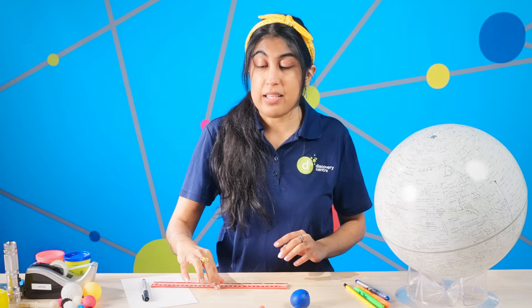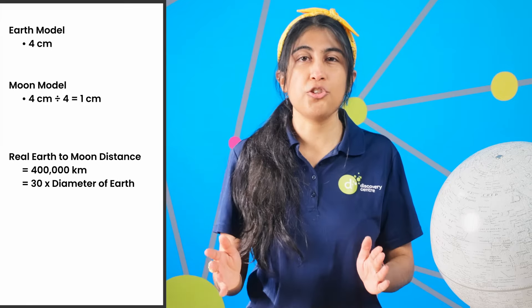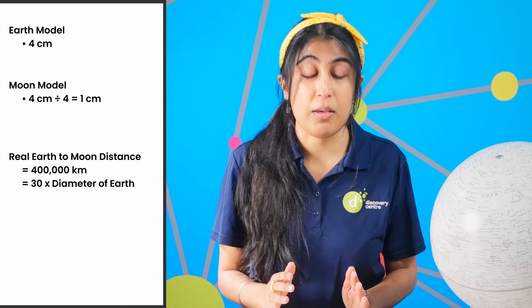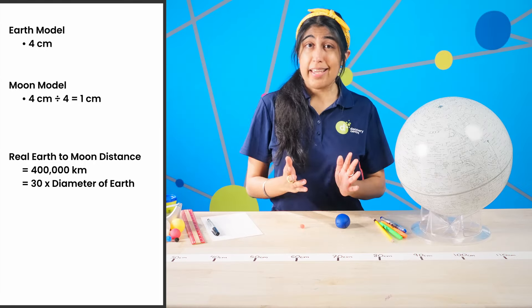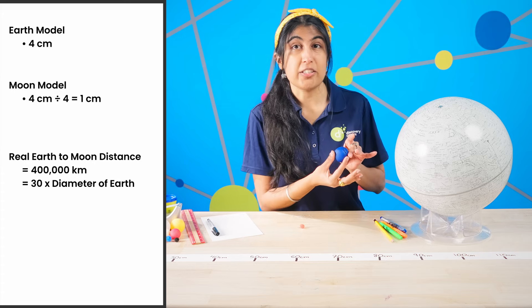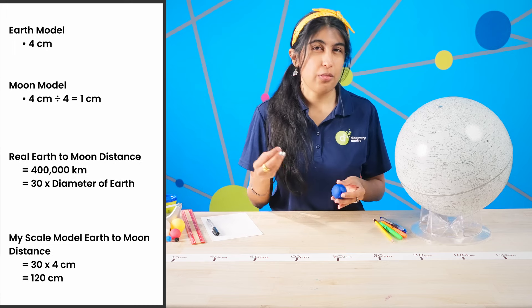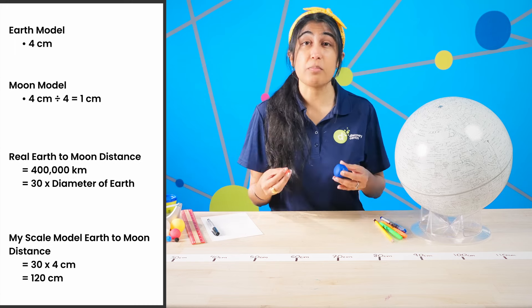Now I must calculate how far away they must be to be to scale. The distance between the Earth and the Moon is about 400,000 kilometers, which is about 30 times the diameter of the Earth. Using my scale model, the diameter of my Earth is 4 centimeters, so I have to place my Earth and Moon system about 30 times 4 centimeters, or 120 centimeters, apart.